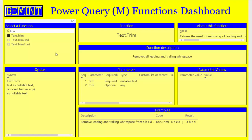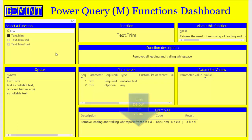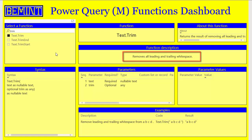If we take a look at this Power Query functions dashboard, there are three trim functions in Power Query: Text.Trim, Text.TrimEnd, and Text.TrimStart. According to the function description, the trim function removes all leading and trailing white space.